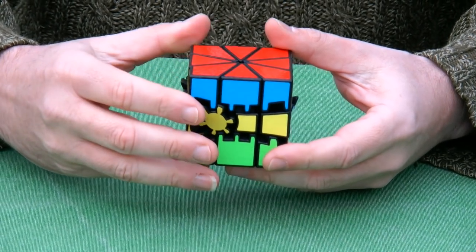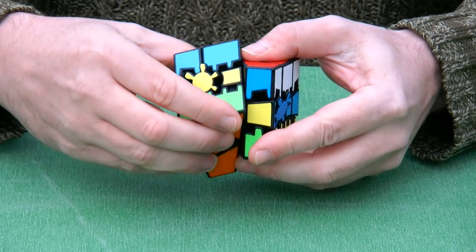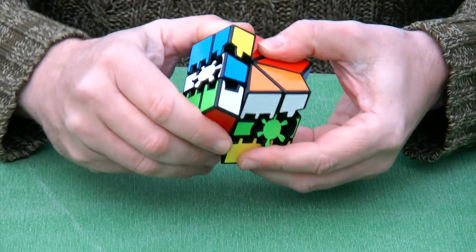It can also turn like a 2x2x1, like this. So this type of turn and that type of turn.